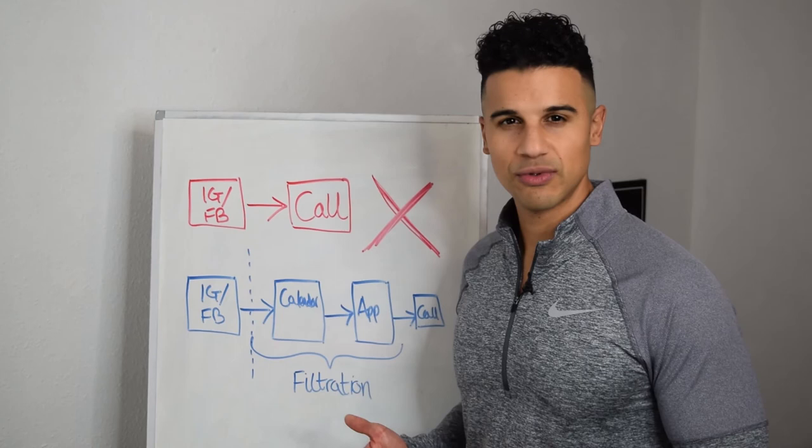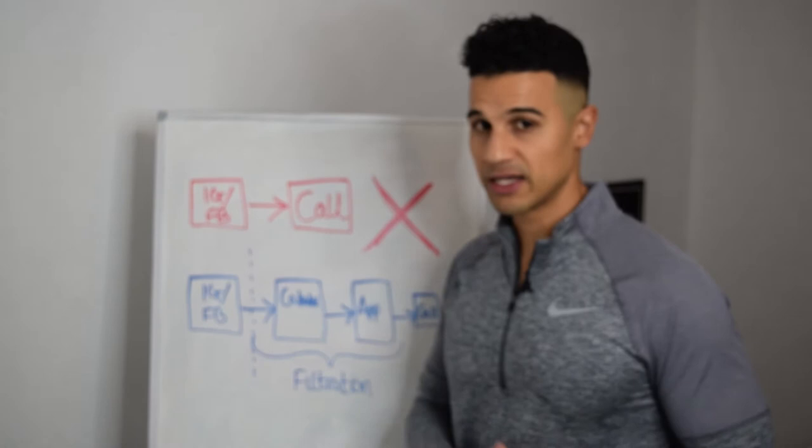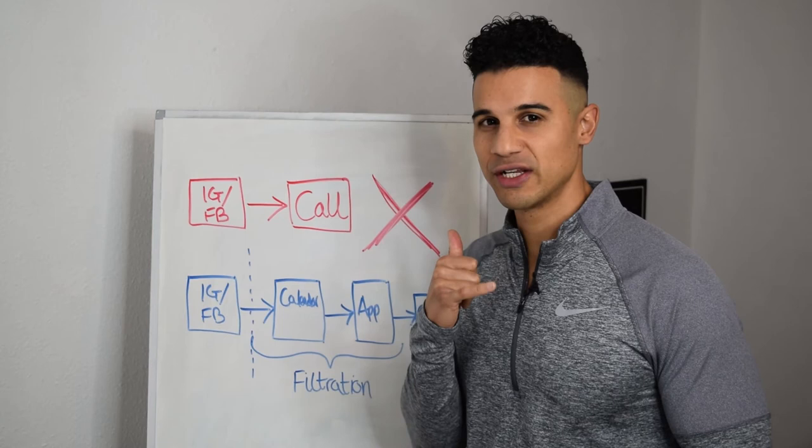So you can find out a lot of that stuff early on without getting straight on a call with them and be able to filter the bad leads from the good leads. And that means you're only going to speak with qualified people, which means when you get on the phone, you're going to have a higher chance of closing because you've actually got some information about them and you know more than you would if you were just to get on a call with them.